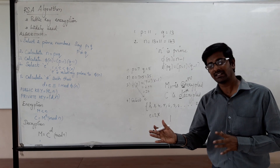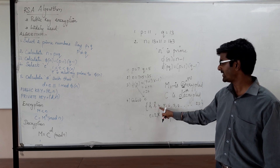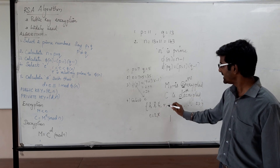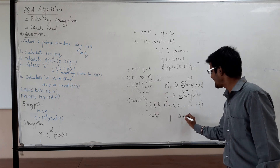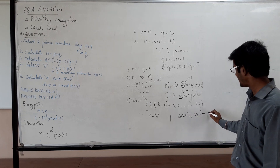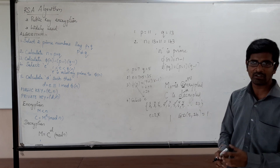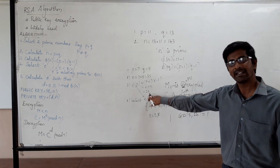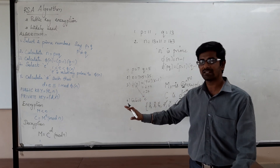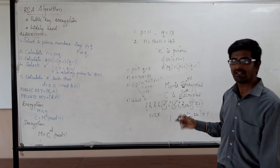We cannot choose 3, 4, 6, 8, 9, or 10 because they share common divisors with 24 other than 1. For example, 3 divides both 9 and 24; 2 divides both 10 and 24. We can choose 5, 7, 11, or 23, since GCD(5, 24)=1. The condition is that E must be relatively prime to φ(N).